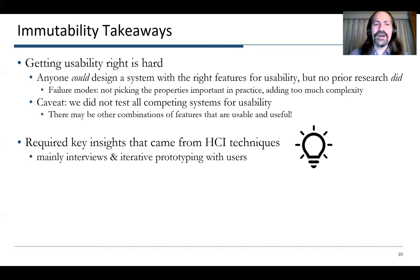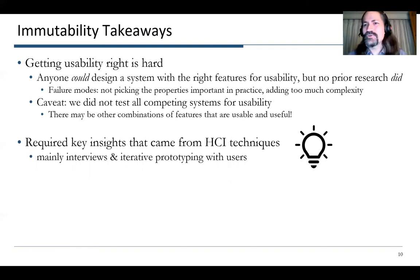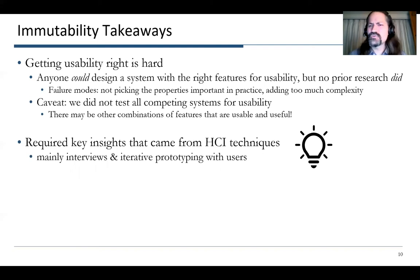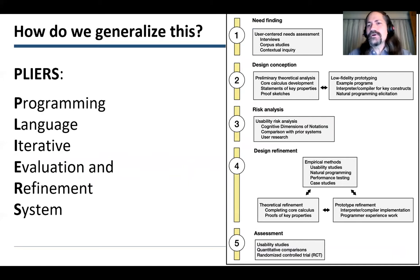The second takeaway is that this really required some key insights that came from HCI techniques — the idea from the domain that we can use class immutability to simplify things, the fact that we should really focus on transitive immutability. Those came from expert interviews, and the final design came from iterative prototyping with users. This was all very important to getting things right.